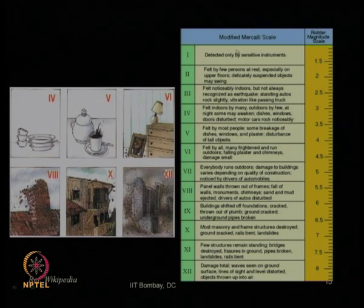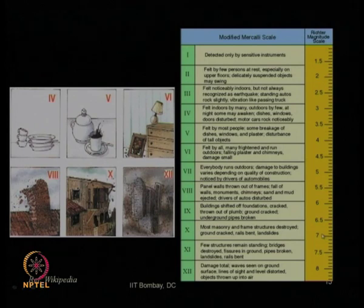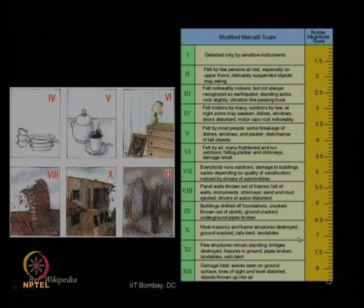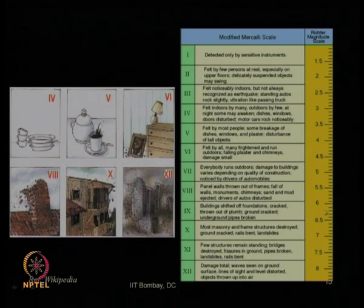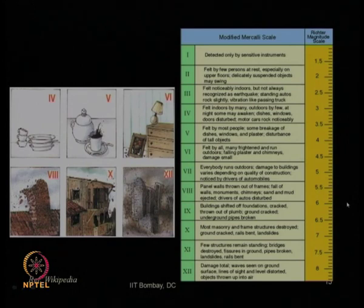This is a typical correlation. It does not mean that where an earthquake of Richter magnitude 7 is occurring in a desert, we will have an MMI scale of intensity 10, because there is no observer. This correlation relates the other way round: where an intensity scale of 9 has been observed qualitatively by an observer, that may correspond to a typical magnitude scale of 6 to 6.5. We can go from intensity to magnitude, but not the other way.